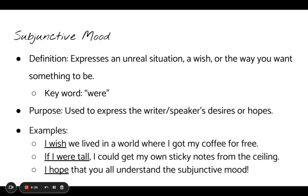Let's look at some examples of the subjunctive mood. First, an 'I wish' example: 'I wish we lived in a world where I got my coffee for free.' It's expressing the way I want something to be, and since it's not real, it's also an unreal situation. Next: 'If I were tall, I could get my own sticky notes from the ceiling' — using that subjunctive word 'were,' expressing an unreal situation. And finally: 'I hope that you all understand the subjunctive mood.' Hopes go with the subjunctive mood too, because it expresses the way you want something to be. So the subjunctive mood can also use the word 'hope.'